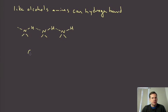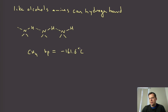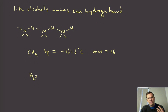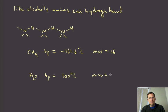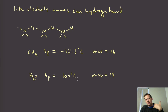We talked about hydrogen bonding in alcohols by comparing boiling points. If we compare the boiling point of methane, that's -161.6 degrees Celsius, with a molecular weight of 16. We can compare that to water — the oxygen analog of methane with just two hydrogens. The boiling point of water is 100 degrees Celsius and the molecular weight is 18. So water is only two mass units higher than methane, but its boiling point is 260 degrees higher, and that's due exclusively to hydrogen bonding potential.